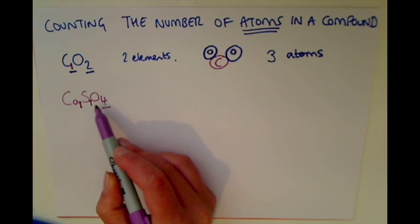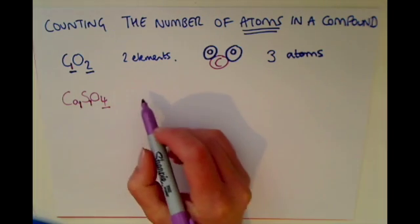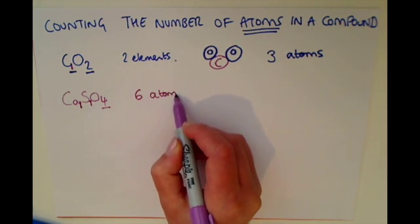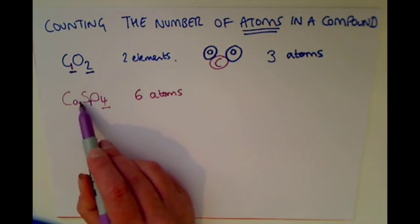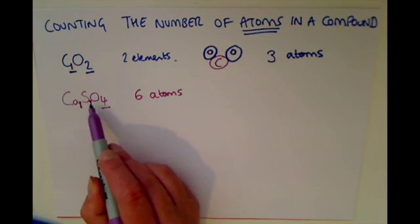So if we add them all together, we've got four atoms of oxygen, one atom of sulfur, one atom of calcium, and that gives us six atoms. There's only one, two, three different elements: calcium, sulfur and oxygen, but there are six atoms in that compound.